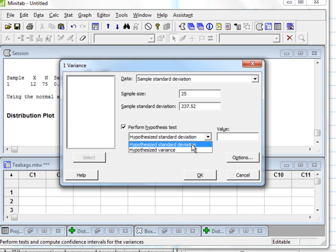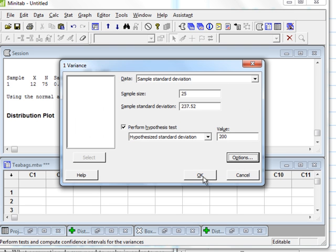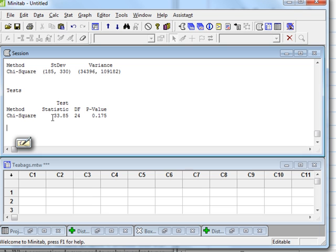My hypothesized standard deviation is already selected, but you'll notice I can choose variance if that's the data I've been given. The hypothesized standard deviation was $200. For options, we want to make sure we've got the alpha represented by the confidence level: 1 minus alpha is 95%, so that's correct. The alternative is not equal to, because we want to see if the standard deviation is different from the claimed standard deviation. Hit OK, and we get our test statistic and our p-value, which is 0.175.